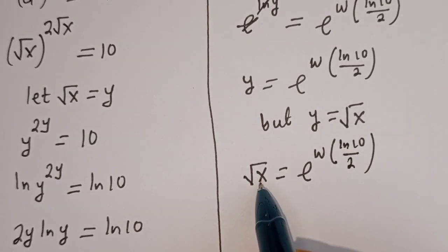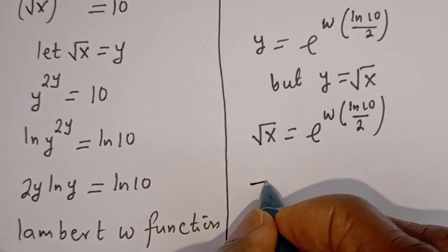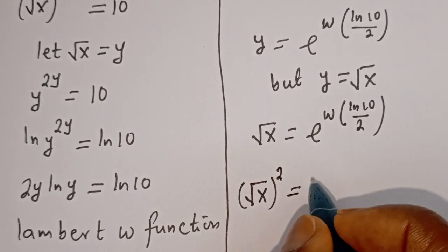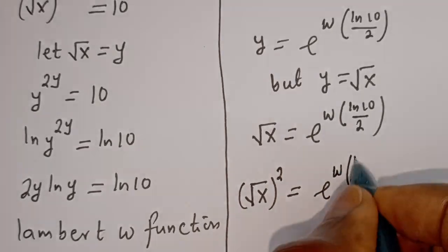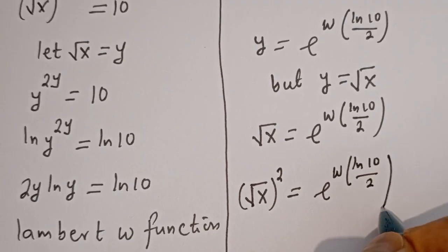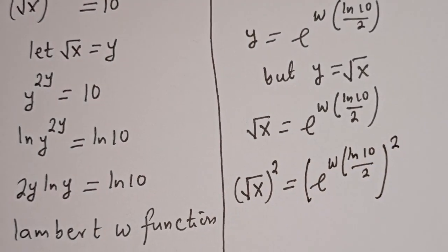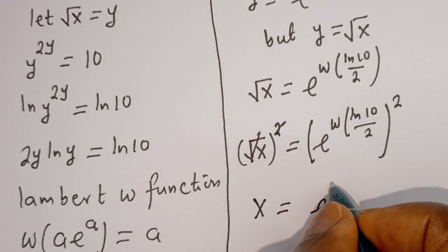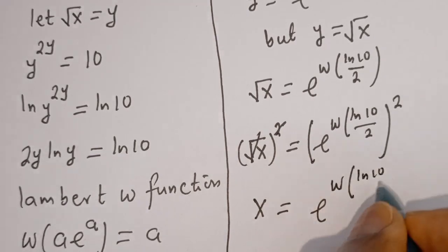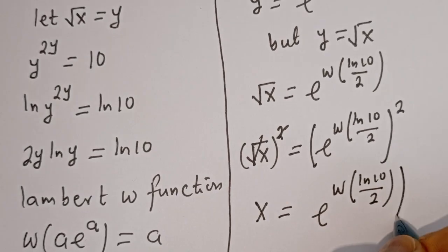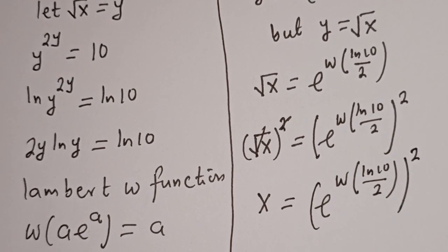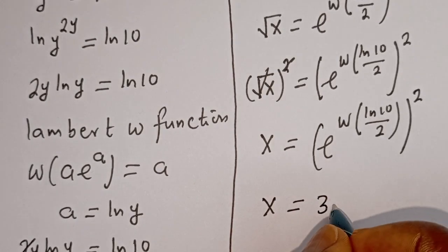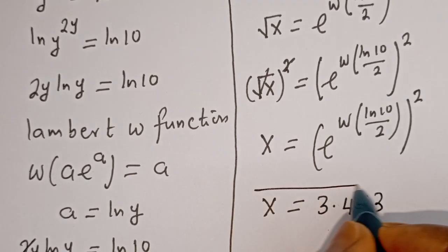Now let's square both sides since we are looking for the value of S. Squaring both sides, the square root of S squared cancels, giving S is equal to e to the power of W(ln(10)/2), all squared. Therefore, using a calculator, S is equal to 3.453, and this is the final answer.